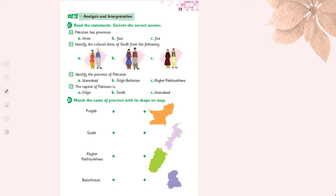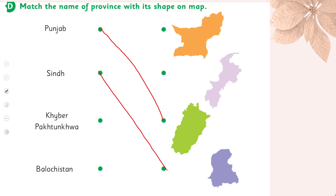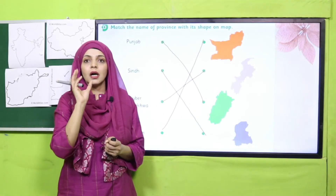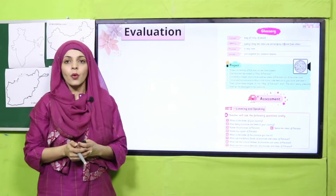Now open page number 13. We will do Exercise D: match the name of the province with its shape on the map. Punjab is green, Sindh is blue, Khyber Pakhtunkhwa is light purple, and Balochistan is orange. This is how you will match the shapes with the provinces. Very good.